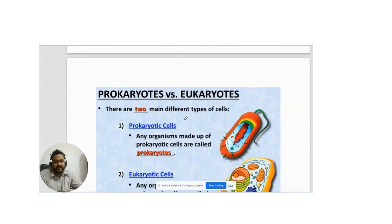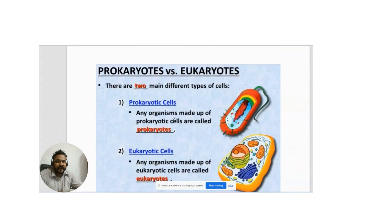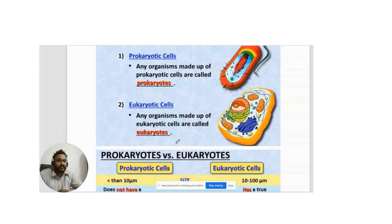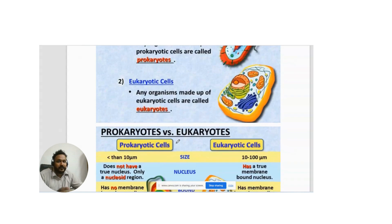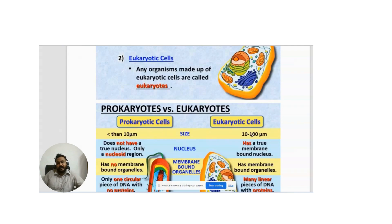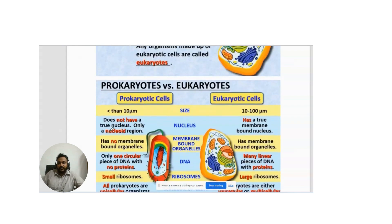There are two main different types of cells. Any organism made up of prokaryotic cells is called a prokaryote, and any organism made up of eukaryotic cells is called a eukaryote. Human beings and animals come under eukaryotes. In terms of size, prokaryotic cells are less than one micrometer, while eukaryotic cells vary from 10 to 100 micrometers.